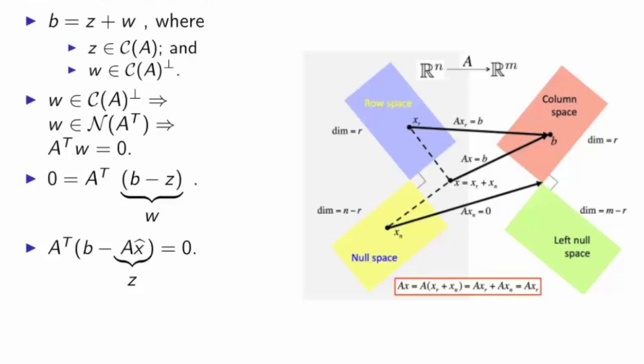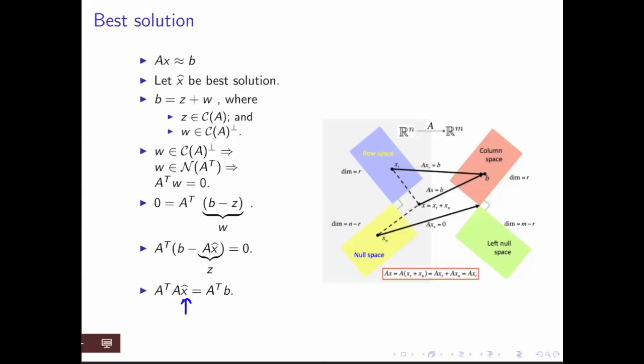But notice that Z is that point in the column space for which we're trying to now solve to get our best approximate solution. We're looking for a vector x hat that satisfies that A transpose times B minus A x hat is equal to zero.